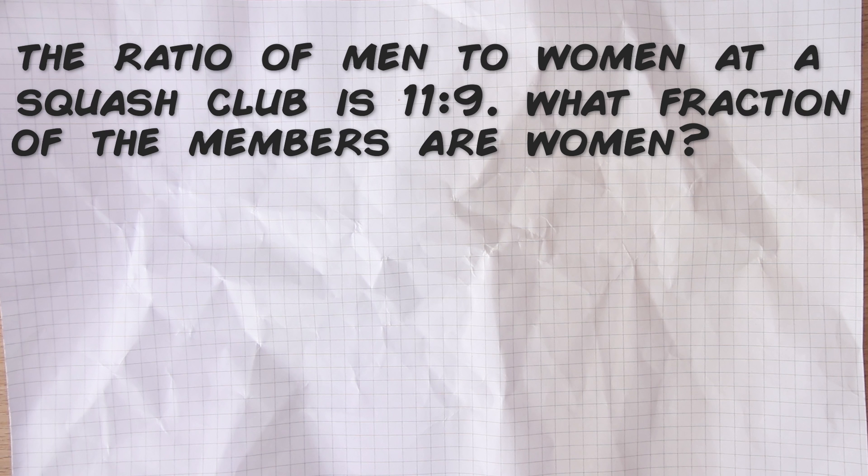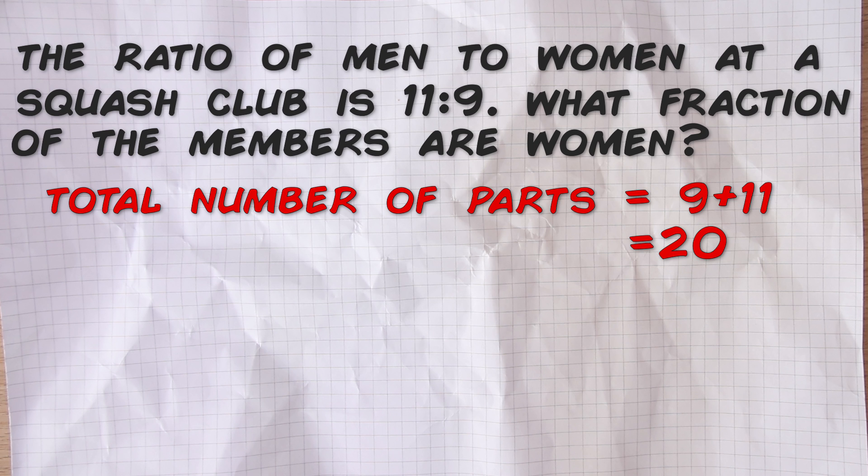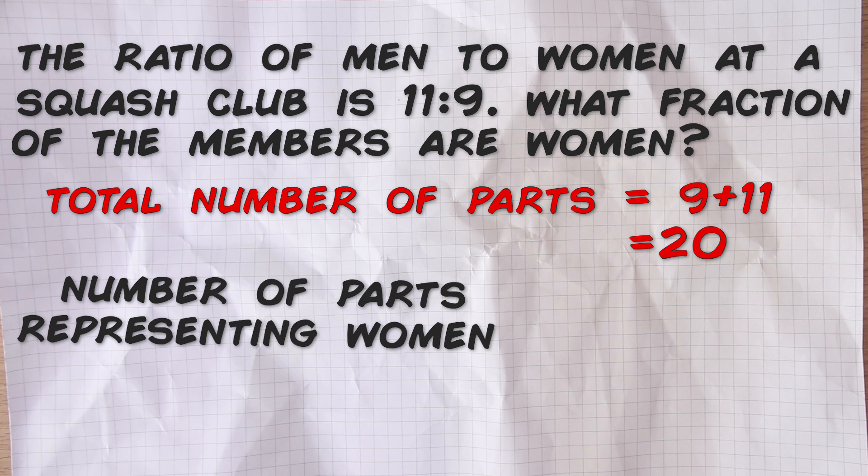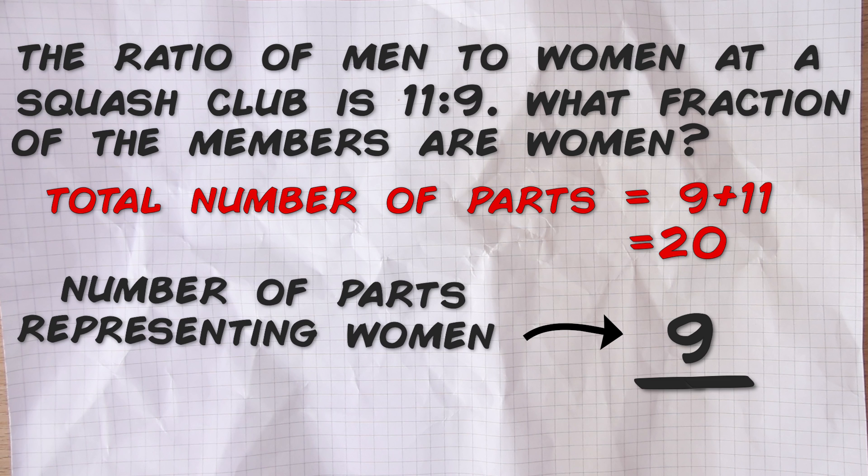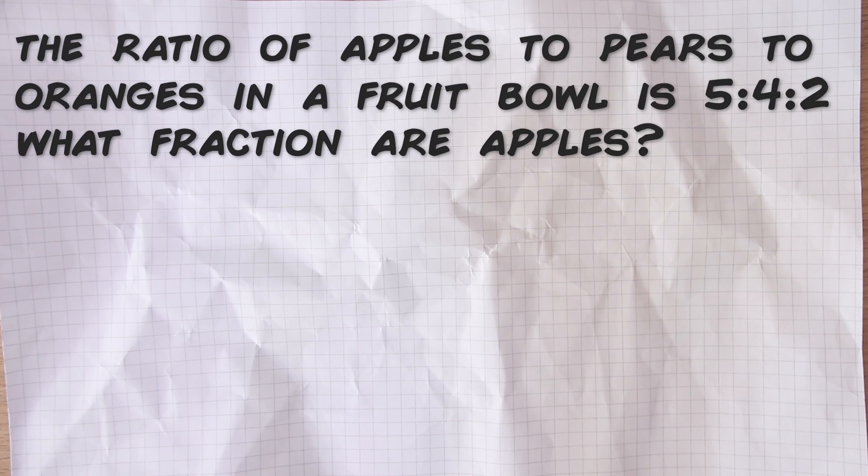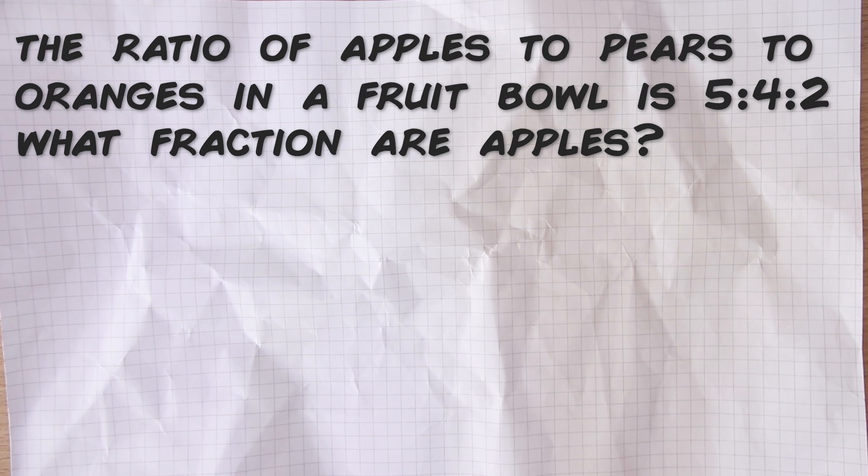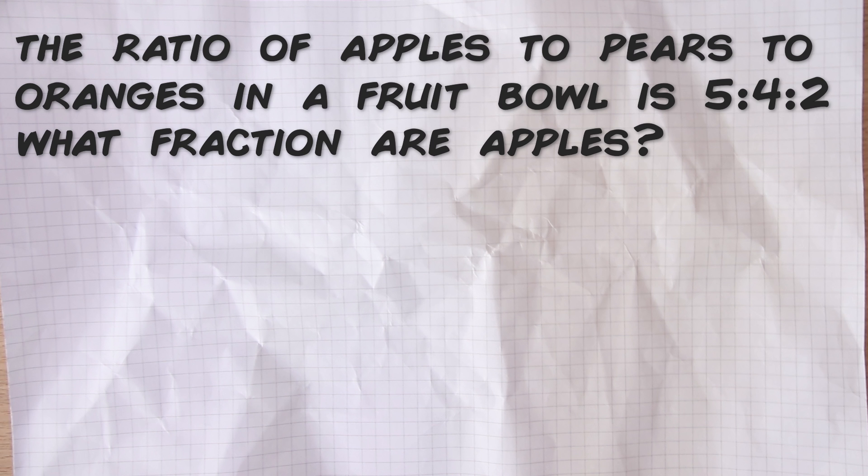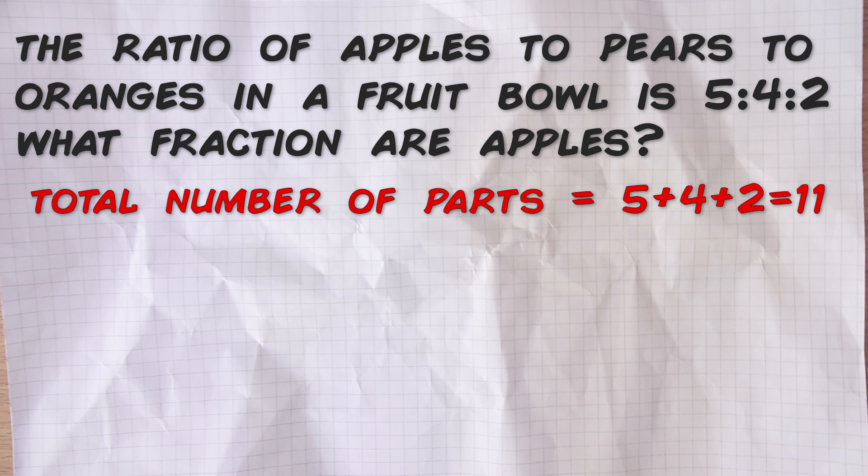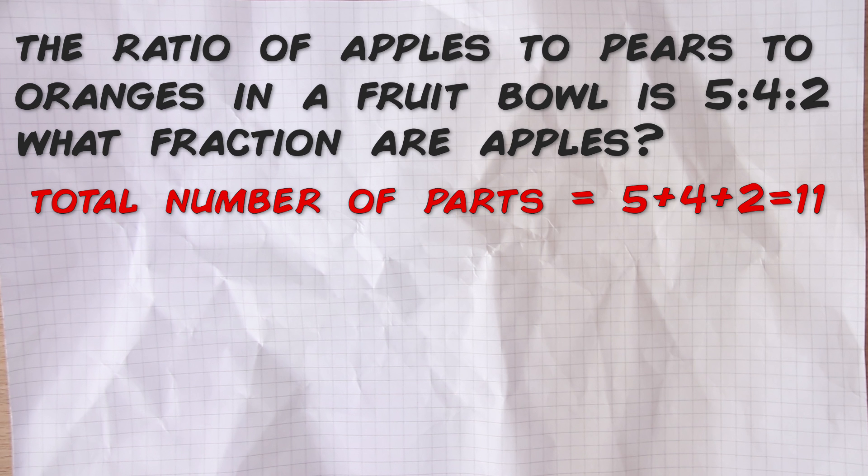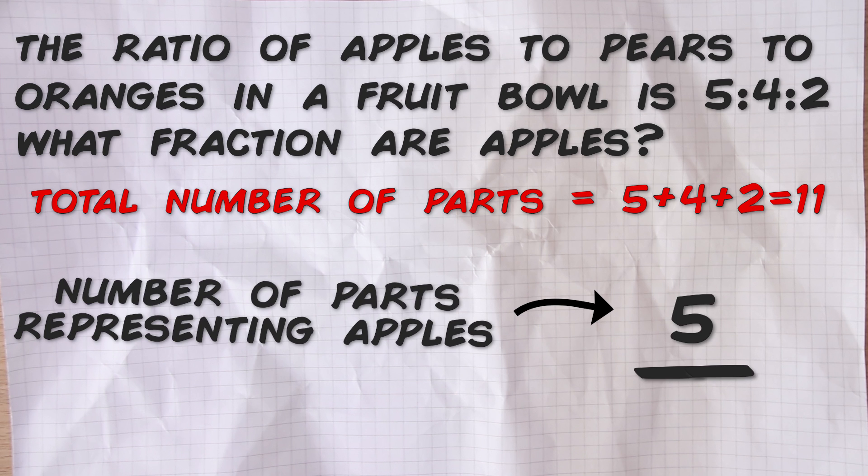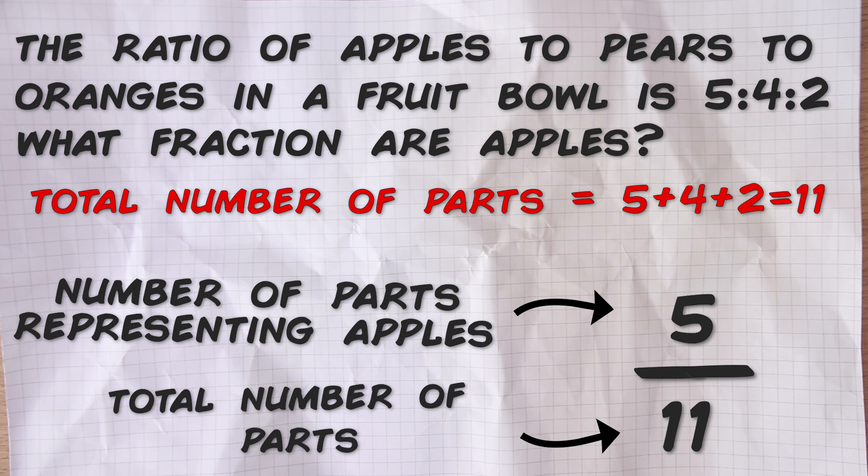The ratio of men to women at a squash club is 11 to 9 and you are asked what fraction of the members are women. Well you find the total number of parts, in other words 9 and 11 which is 20, and then you write the number of parts that are women, which is 9, as a fraction of that total. Nine twentieths in other words. So nine twentieths of the members of the squash club are women. Final example: the number of apples to pears to oranges in a fruit bowl is 5 to 4 to 2. What fraction of the fruit is apples? Well 5 and 4 and 2 is 11, so there are 11 parts in total and 5 of them are apples. So five elevenths are apples. Here's a few of those for you to practice. Pause the video and I'll be back in a few seconds to wrap things up.